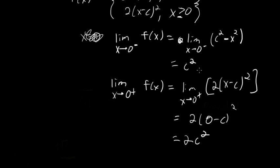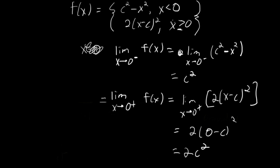We want these left and right limits to be equal to one another. We already know that the right limit is equal to the function value at 0, because f of x is defined as 2 times the quantity x minus c squared for values of x greater than or equal to 0. So plugging in 0 gives the function value at 0, and because it's a polynomial and therefore continuous, that's also equal to the limit as x approaches 0 from the right. So f of 0 equals the right-hand limit.